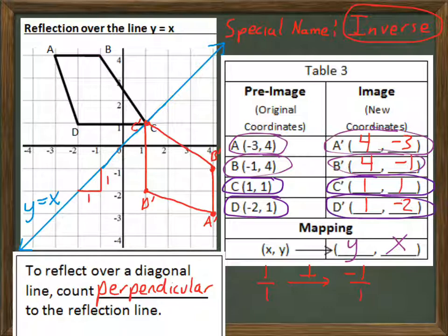So, you can either count diagonally to the line, or just remember that the x and y coordinates switch places. Hope that all makes sense, and I guess I'll see you guys in class.